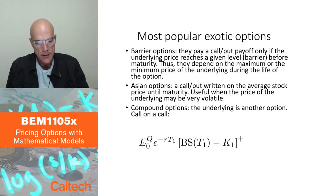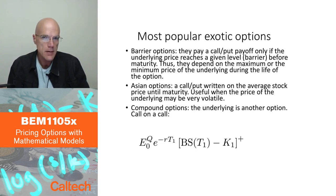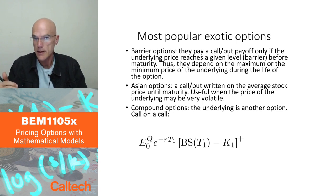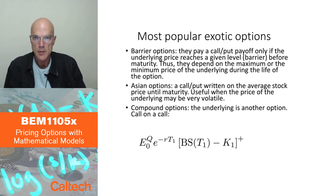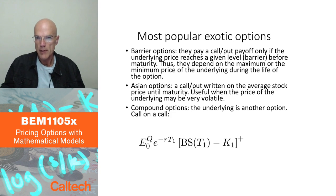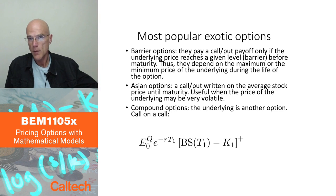Let's also mention compound options, which are options on options. If you're thinking about an option, it has a positive value before maturity, so why not have an option to buy an option or an option to sell an option? That's what the compound option is. For example, a call on a call is an option to buy a call option at some future time, say three months from now.